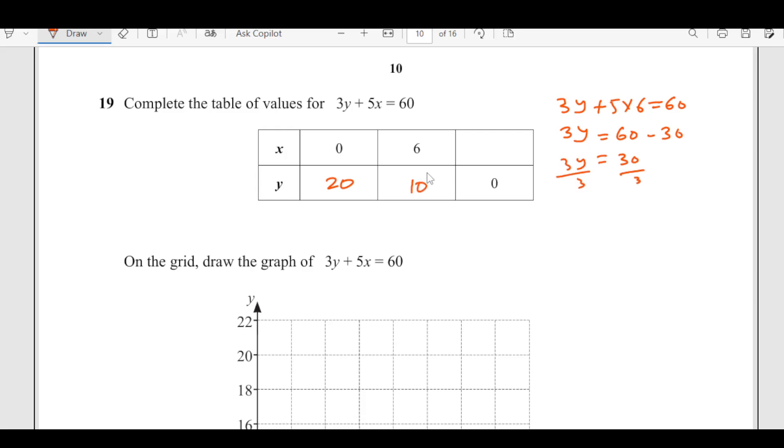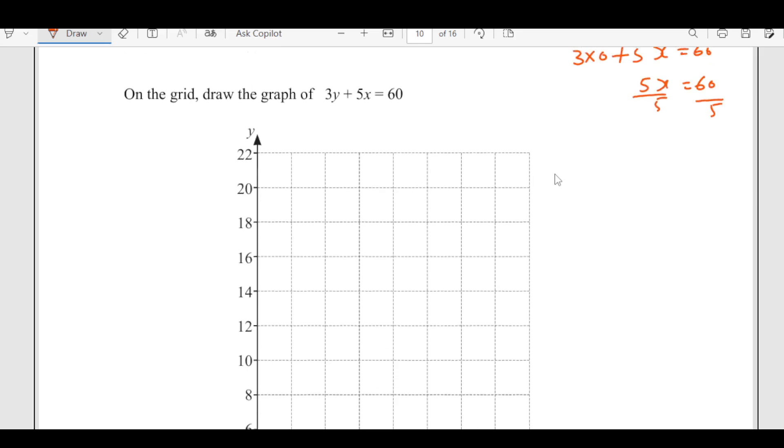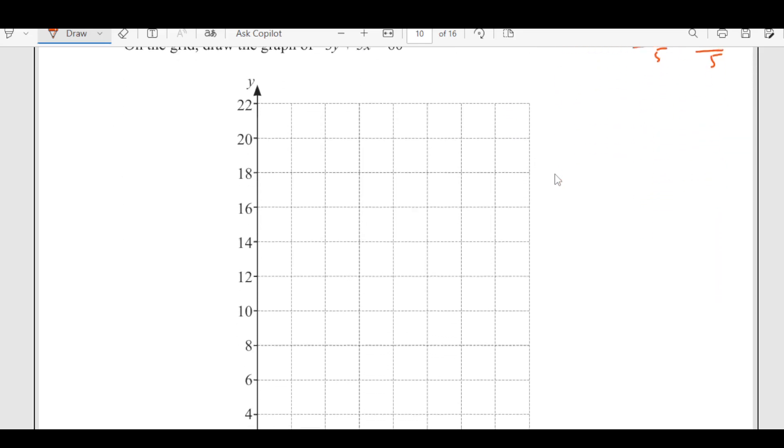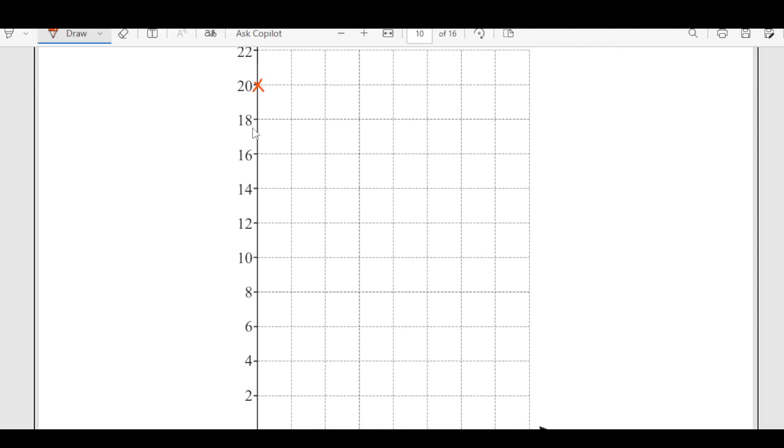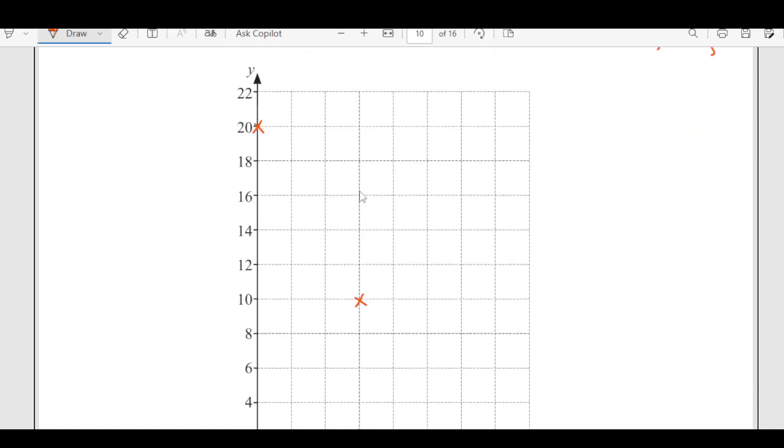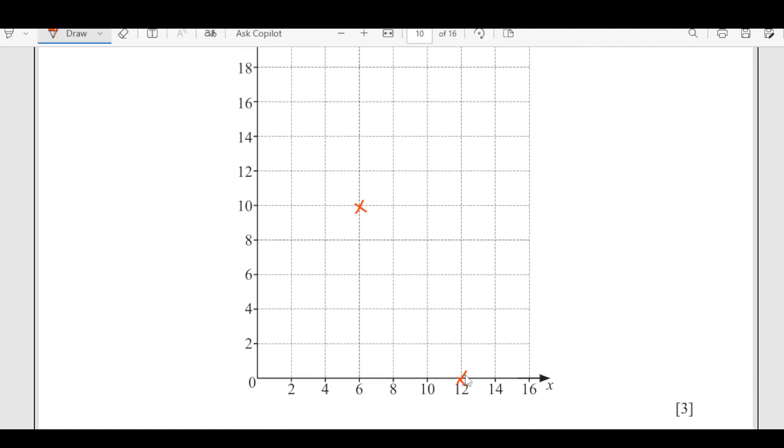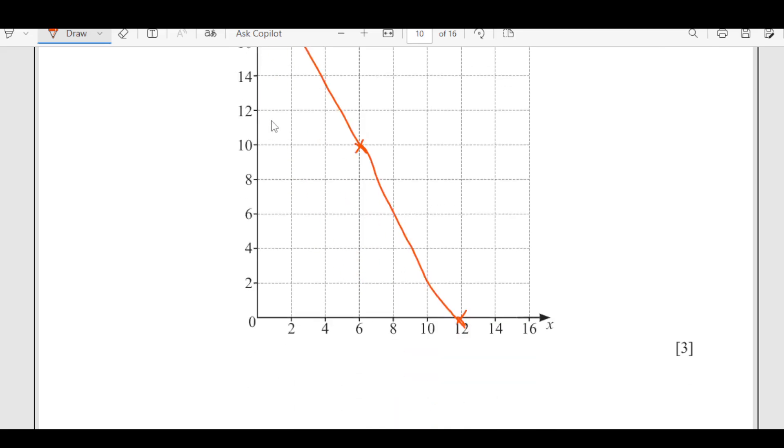When y is 0, 3 times 0 plus 5x equals 60, then 5x equals 60 divided by 5, so this is 12. We have the values now. On the grid, draw the graph. First value we have 0 and 20, that's here. Then 6 and 10, 6 is here along this 10 is here. Then we have 12 and 0, 12 and 0 is here. Now use your ruler to draw join all these lines.